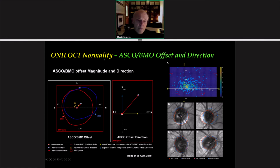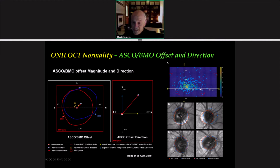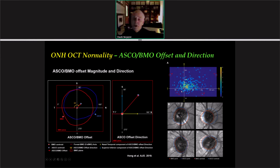A parameter we call ASCO-BMO offset is depicted here schematically for an individual eye. Bruch's membrane opening points have been fitted with a curve, and their centroid is located at the origin within the BMO reference plane. This allows us to plot the direction of the neural canal. For all 362 eyes, each data point is the ASCO centroid relative to the BMO centroid at the offset. From this, you can see that the majority of eyes have the neural canal passing through the sclera heading towards the superior nasal quadrant.